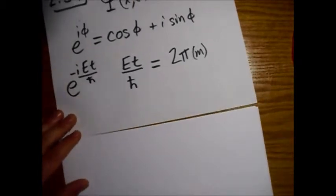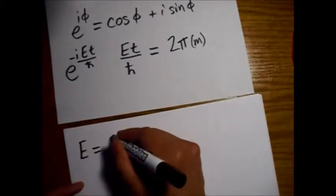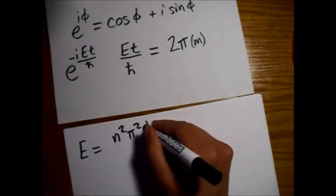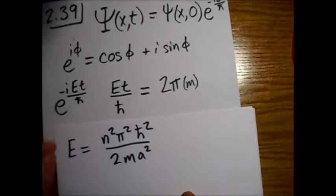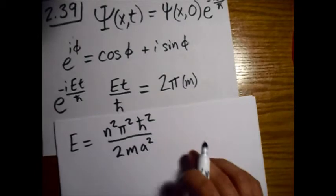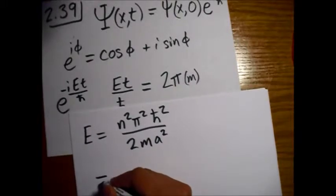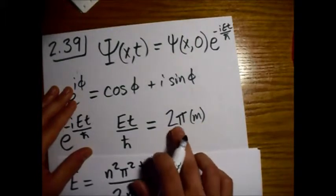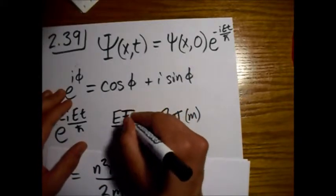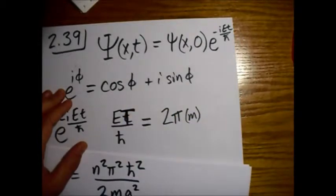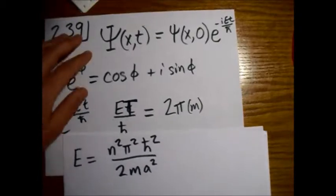So now we just remember the energy for the infinite square well. So n squared pi squared h bar squared over 2m a squared. Now we're going to plug this into here and solve for t. And I guess once I force this to be equal to 2 pi, that's when I can write this little t as a big T because that's sort of a revival time, the big T. So little t equals big T when this is a multiple of 2 pi.